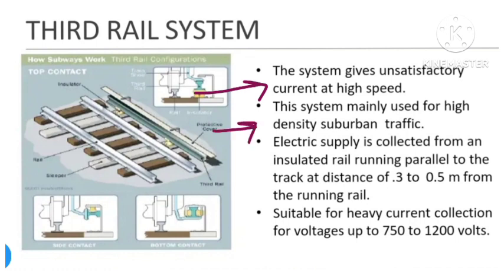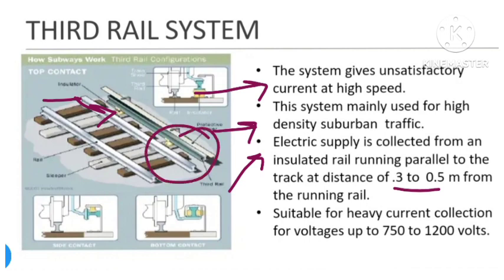The third point is that the electric supply is collected from an insulated rail running parallel to the track at a distance of 0.3 to 0.5 meters. As you can see in the diagram, the insulator collects the current from this insulated rail which runs parallel to the track.